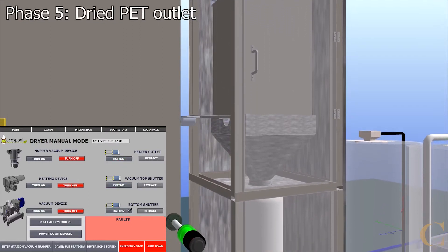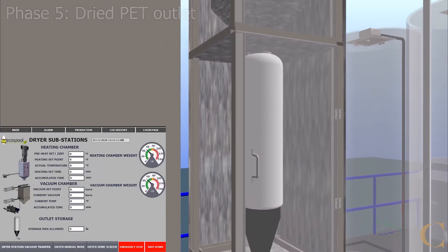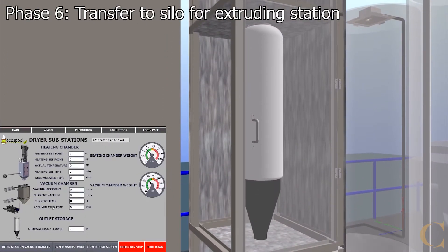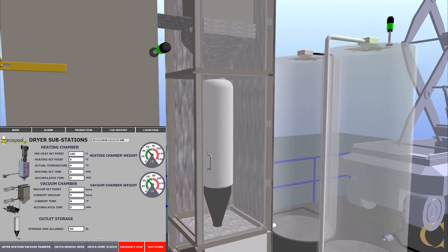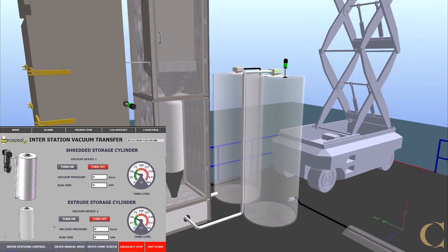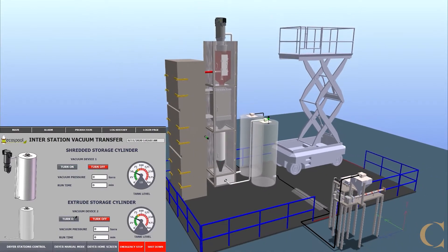During Phase 5, the moisture-free PET particulates drop freely through the outlet. And during the final phase, the particulates are vacuum transferred to the final storage silo for the extruder to access. A full suite of monitoring windows and manual controls are available to operators via the HMI when troubleshooting, maintaining the machine, and ensuring the quality of the product PET material.